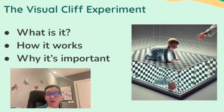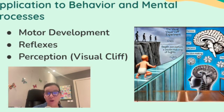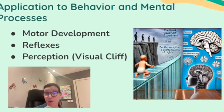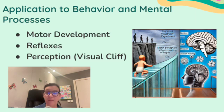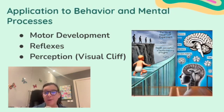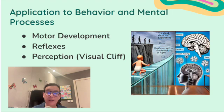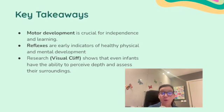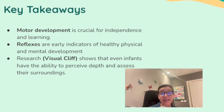Now let's look at the applications to behavior and mental processes. As children develop fine and gross motor skills, they gain more independence, which impacts their ability to interact socially, explore their environment, and learn new skills. Reflexes like the rooting reflex are tied to survival and show that the nervous system is developing properly, which is crucial for further learning and cognitive development. And depth perception, as seen in the visual cliff experiment, helps infants navigate their environment, important for safety and exploring new surroundings. The key takeaways are: motor development is crucial for independence and learning; reflexes are indicators of healthy physical and mental development; and research like the visual cliff shows that even infants have the ability to perceive depth and assess their surroundings.